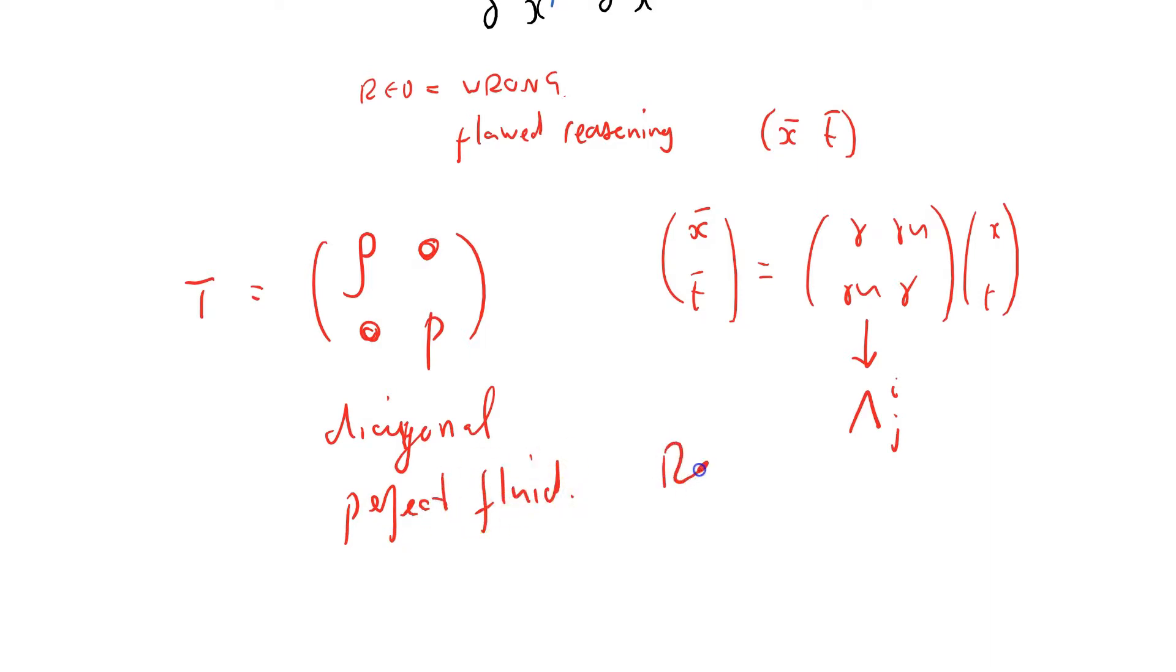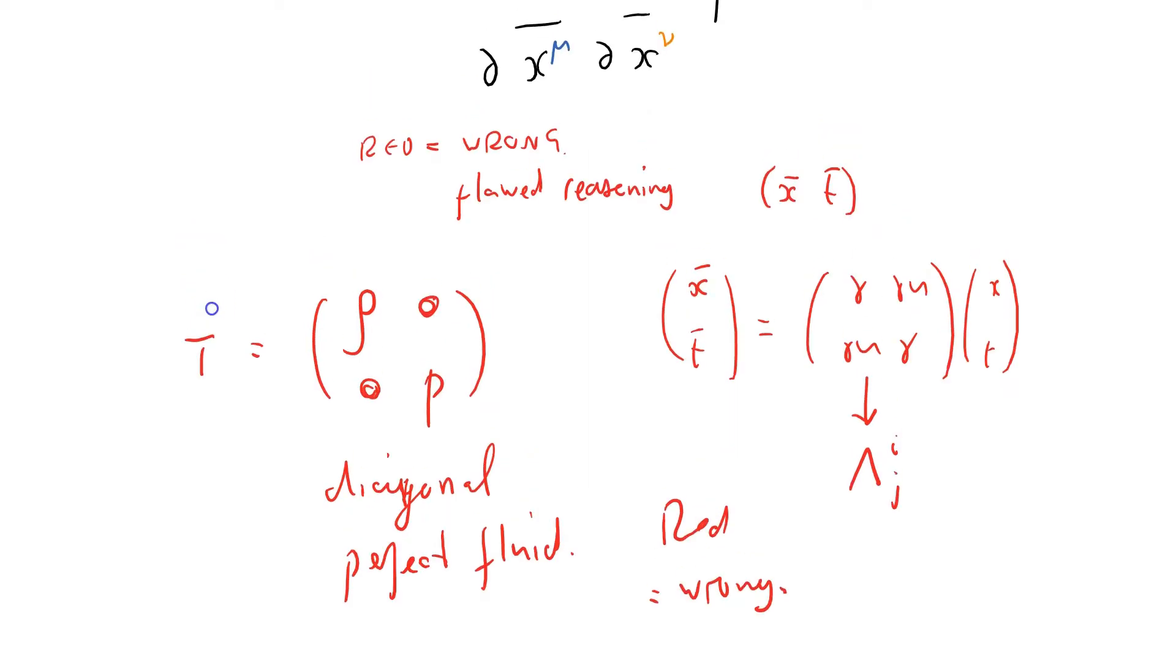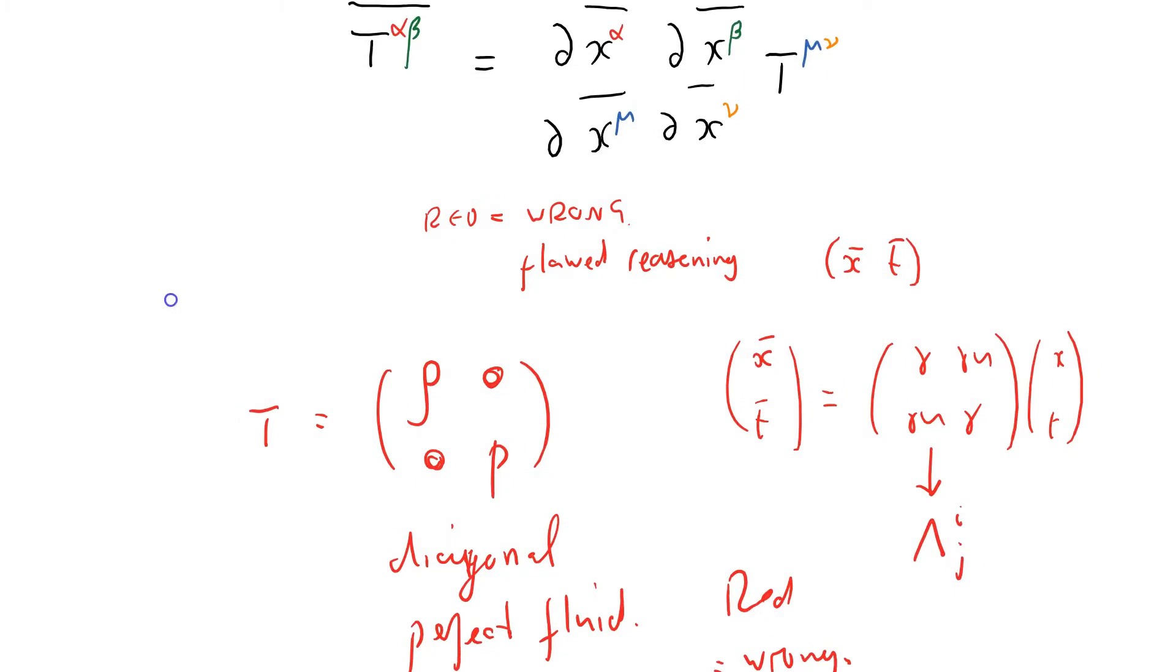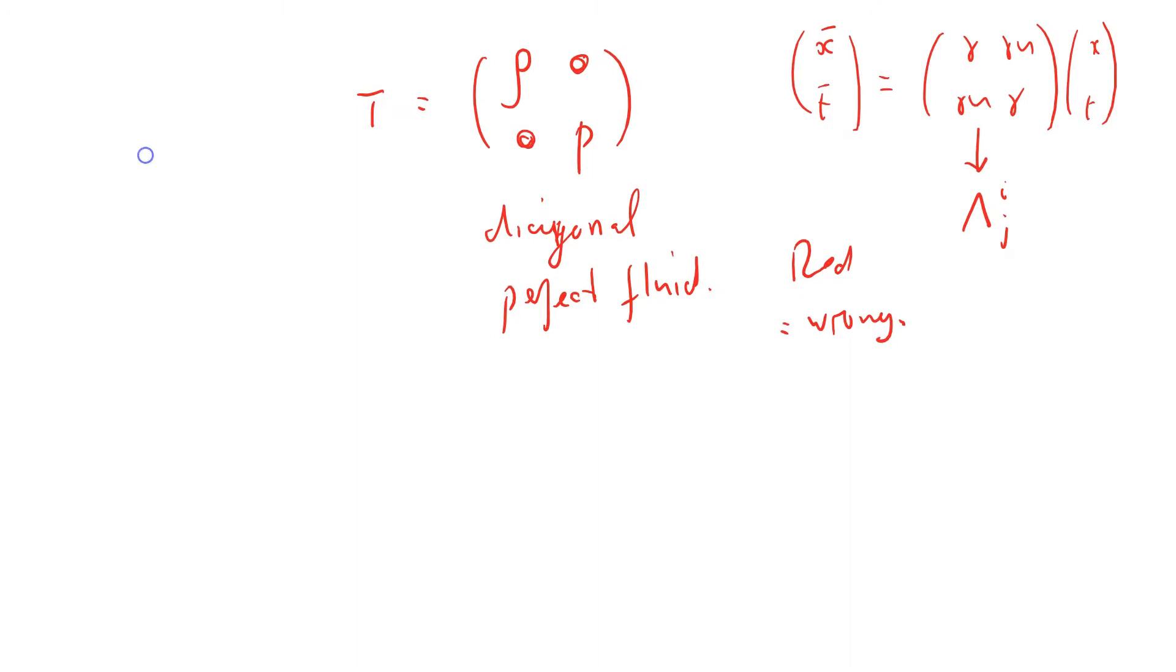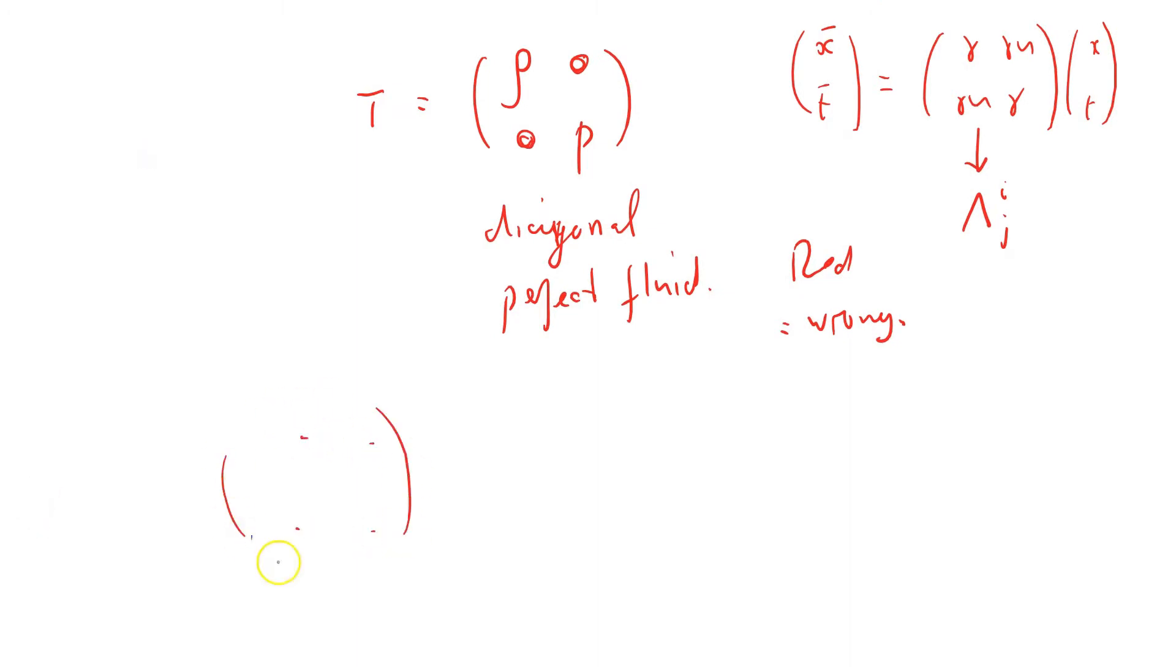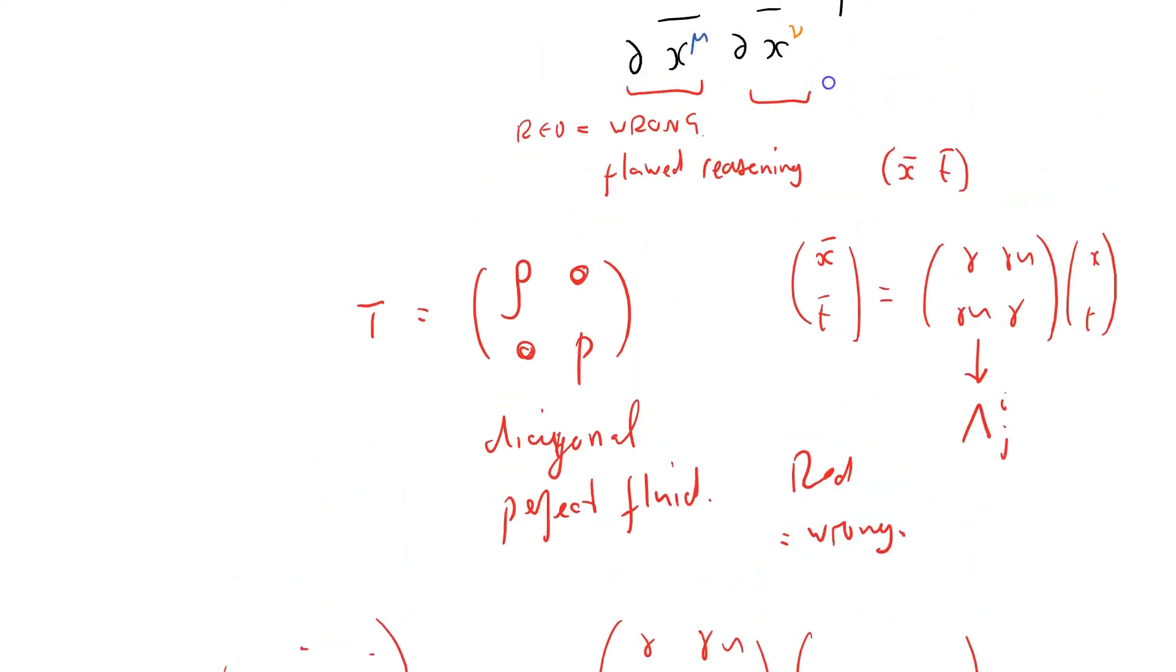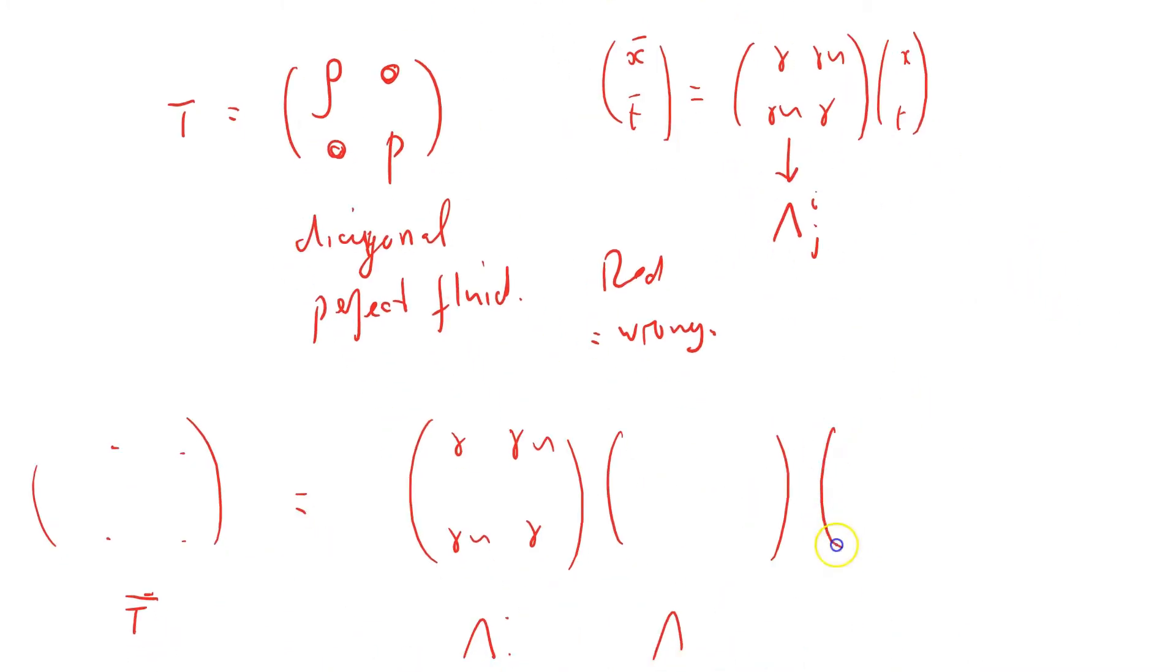Remember, red equals wrong. Okay, so how do I evaluate all these things? Well, let's just write it out. This thing here is t-bar, which equals my first component of my Lorentz transform times the second component, which is the first one, the second one, and here's the third one, which is the stress energy tensor rho 0, 0p.